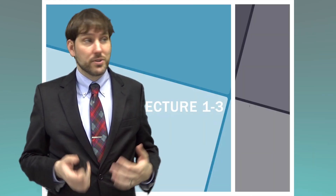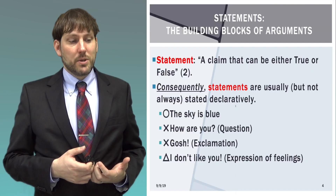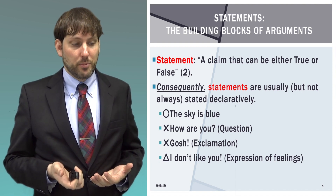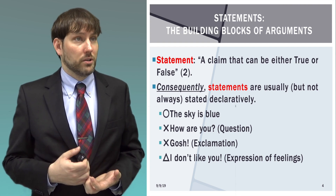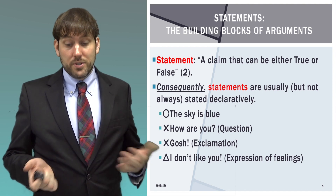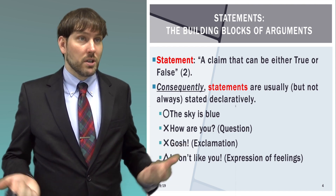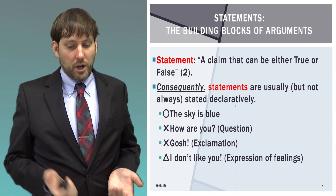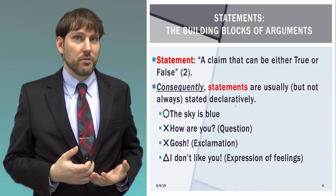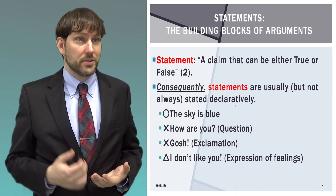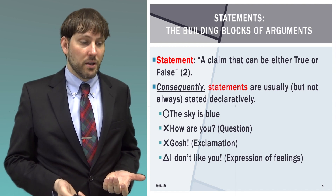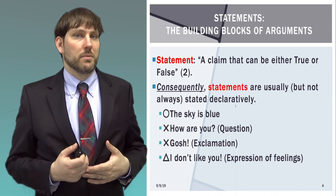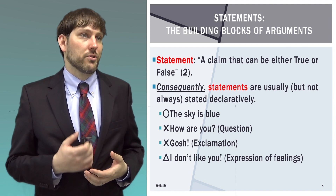Let's review what we saw in the previous lectures. A statement is something that can be either true or false, and statements are usually, but not always, stated declaratively. For example, 'the sky is blue' is a statement — it is a true claim we can evaluate. 'How are you?' is a question, not a statement; it has no truth value. Exclamations like 'gosh' or 'ouch' also do not have a truth value. Expressions of feeling like 'I don't like you' are probably statements, but they are difficult to evaluate.